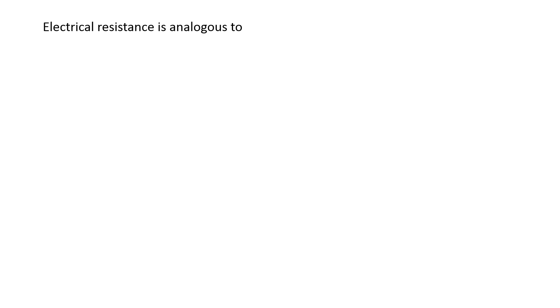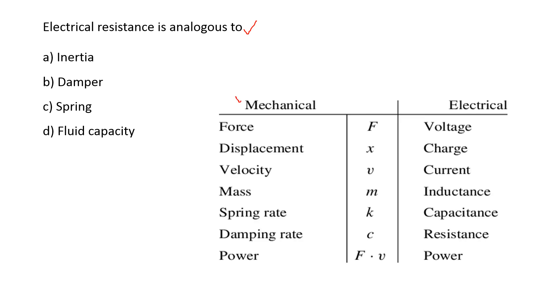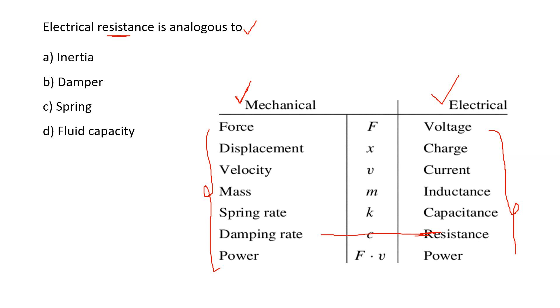Next question: electrical resistance is analogous to — options are: inertia, damper, spring, and fluid capacity. This tabular column represents the analogy between mechanical and electrical systems. They are asking for the analogy element for resistance. Resistance in the electrical system is analogous to the damping rate or damper. So option B is the right answer.